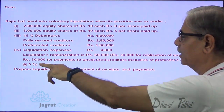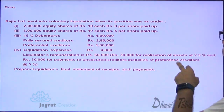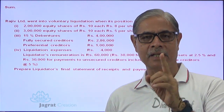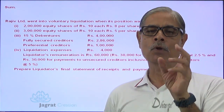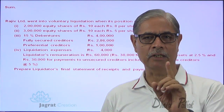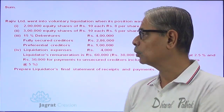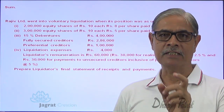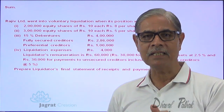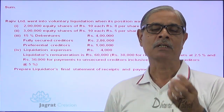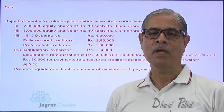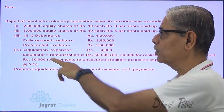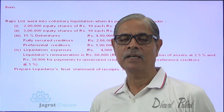And 30,000 for payment of unsecured creditors inclusive of preferential creditors at the rate of 5%. So whatever the payment is made to preferential creditors and unsecured creditors, on that payment 5% remuneration is payable to the liquidator, and that 5% is equal to 30,000. On the basis of that, we can find out the assets realized.